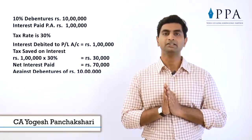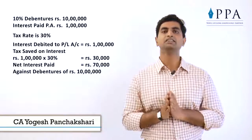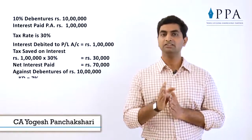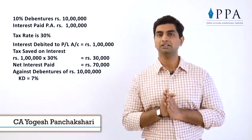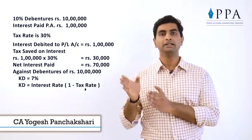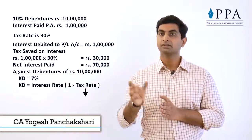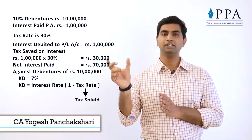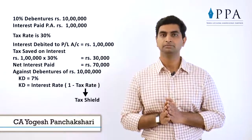So the ultimate interest rate comes to 70,000 divided by 10 lakh, that is 7% only. Thus KD is not 10% but it is 7%. That's why the formula is KD = Interest Rate × (1 - Tax Rate). This (1 - Tax Rate) means you are saving the tax, called the tax shield.